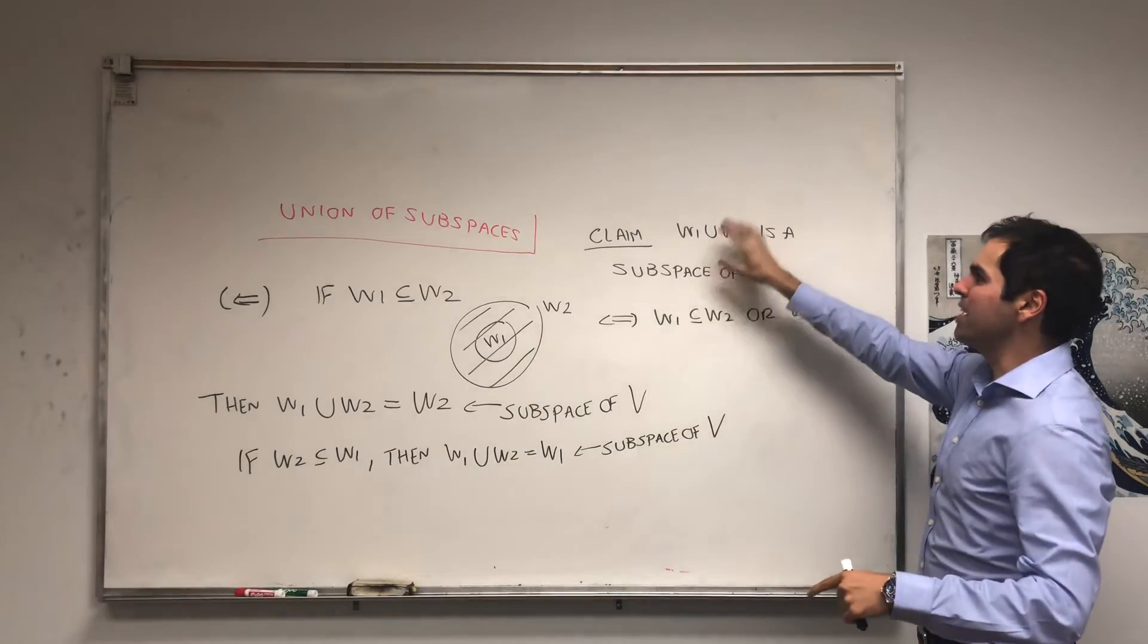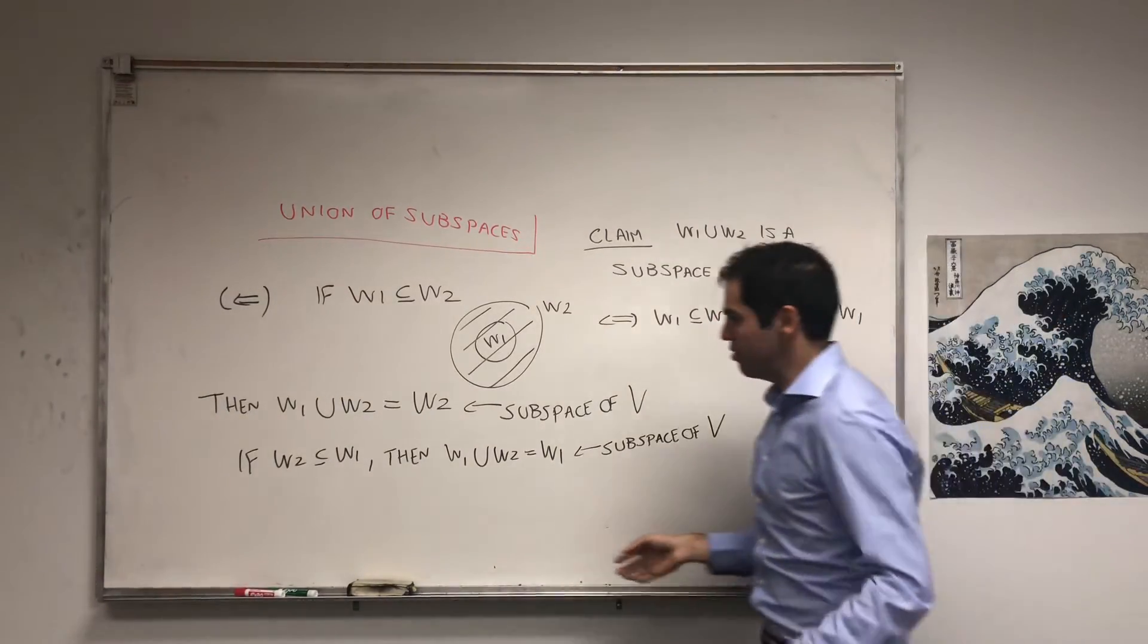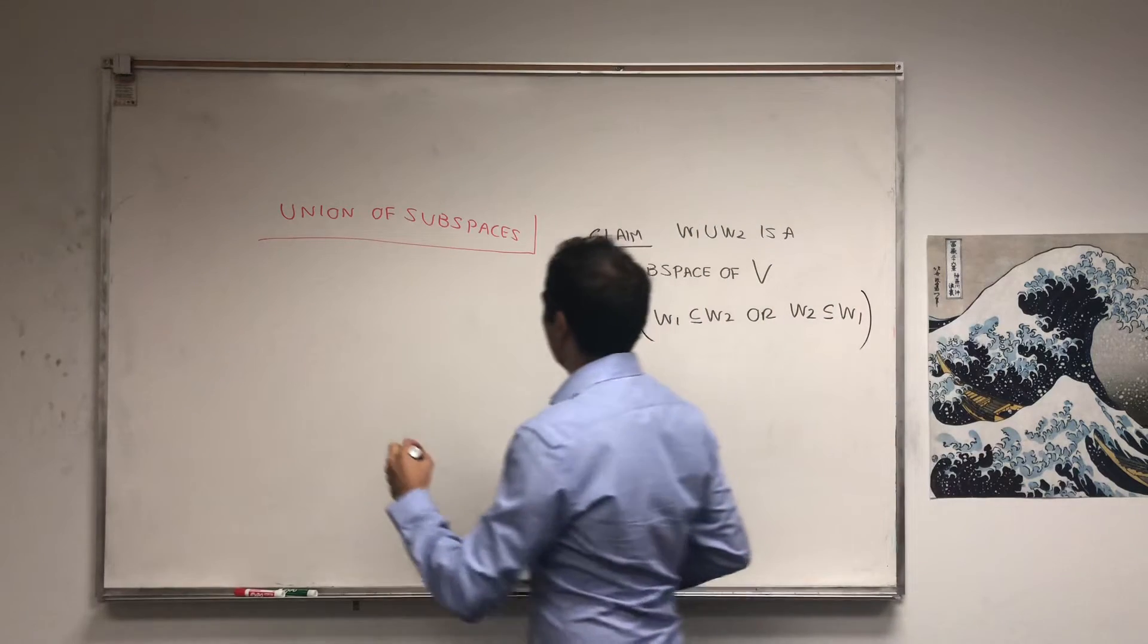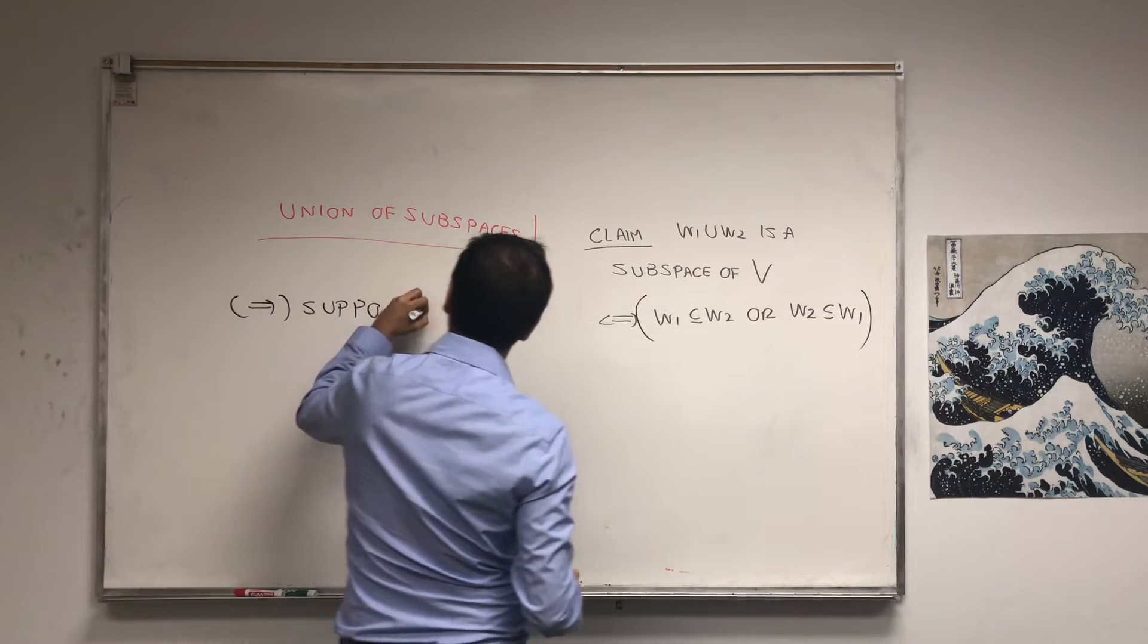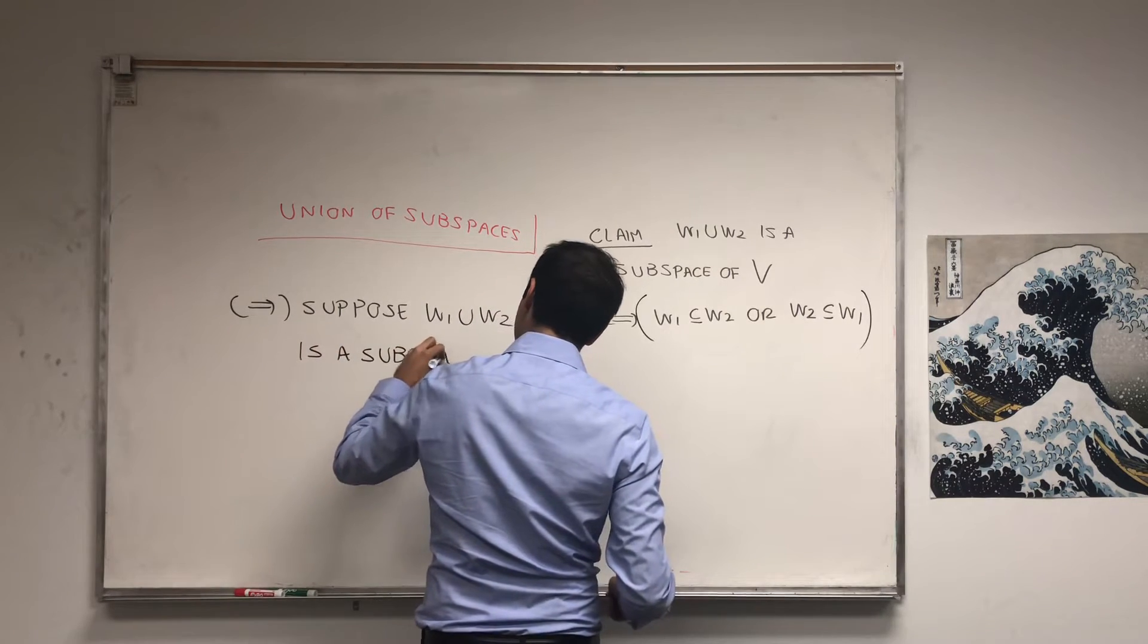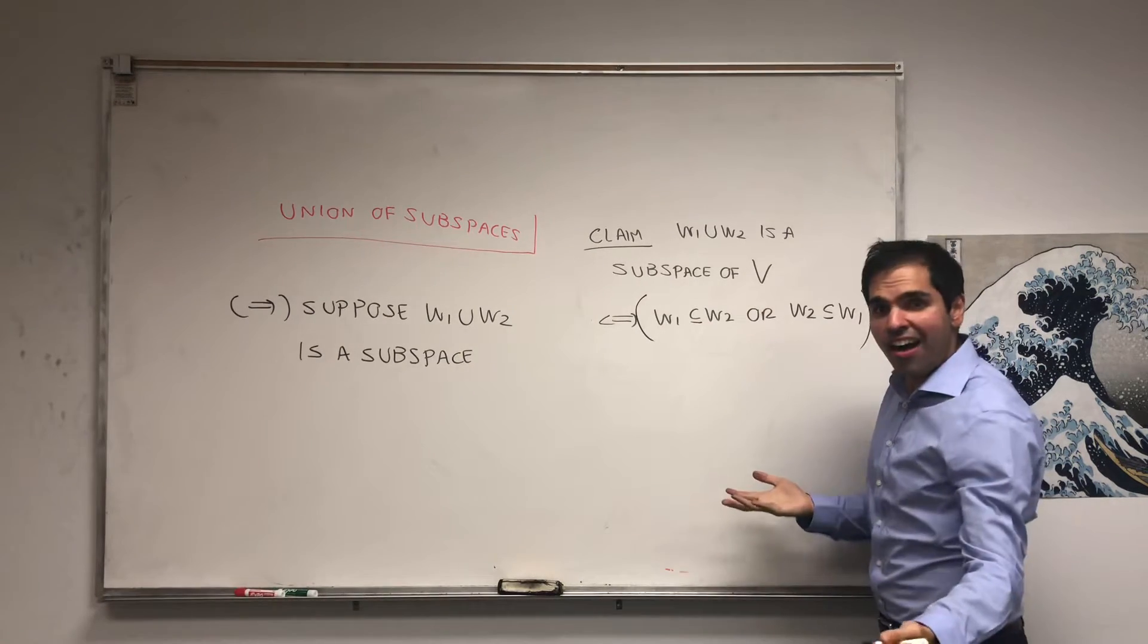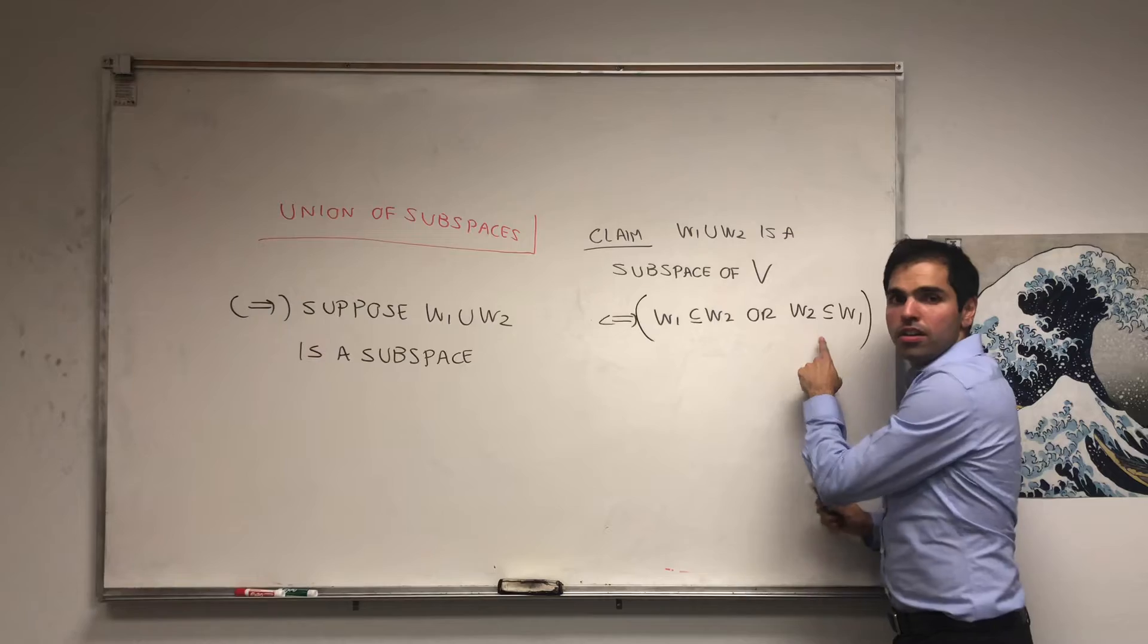What's more important is the other one, namely, if the union is a subspace, then only one of those two things hold, or both. So, and this is actually teaches us how to prove things. Suppose the union is a subspace, so W1 union W2 is a subspace. Then, either one of those cases hold. Either W1 is a subspace of W2, or it's not. So let's assume that it's not and show that W2 is a subset of W1 is true.